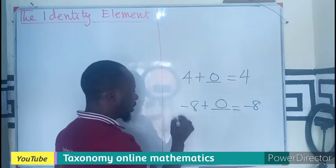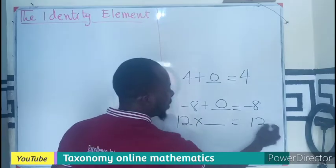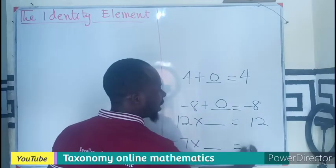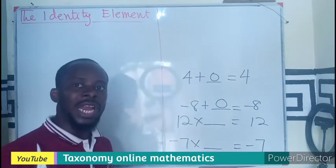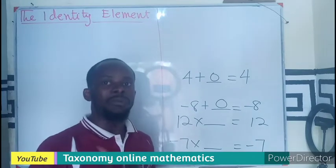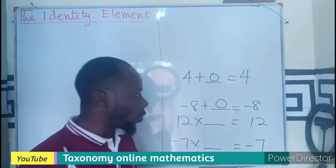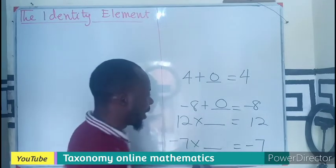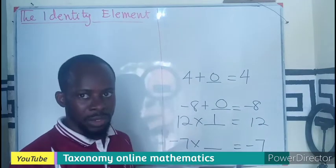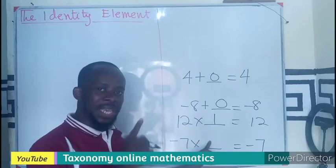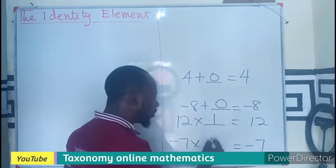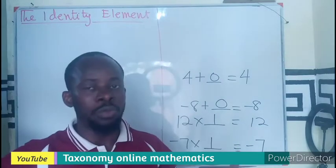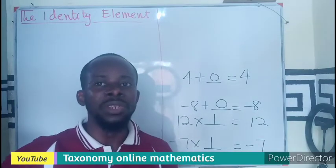Now if I want to say 12 times a given number still give me 12, then negative 7 times a certain number giving me negative 7 will always be 1. So we have the identity element of addition to be 0. I am also here looking for the identity element of multiplication. What number will I use to multiply 12 in order to get 12? And here we have 1 times 12 gives us the same answer. Negative 7 times a given number giving me negative 7 will always be 1. So we have the identity element of addition to be 0, that of multiplication to be 1.